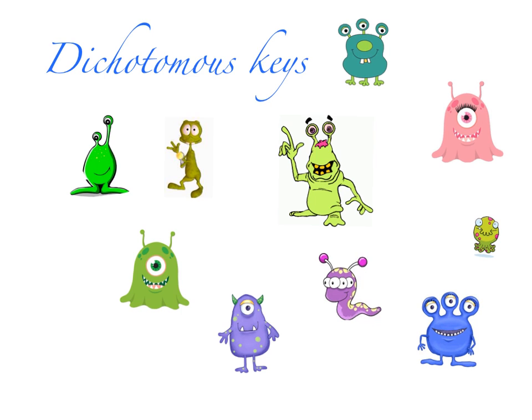Let's look at making a dichotomous key that we could use to identify species of aliens. There's no right way to do this. Lots of different keys could identify these organisms for us, but we start by dividing them into two groups.